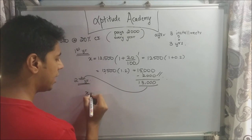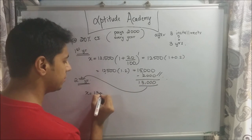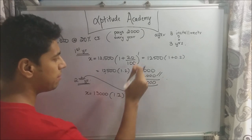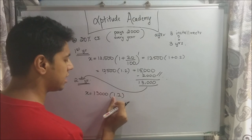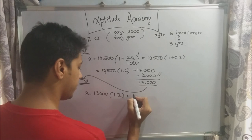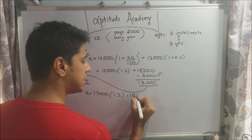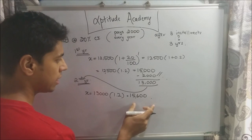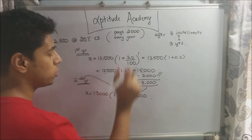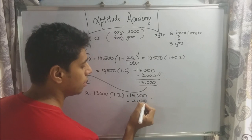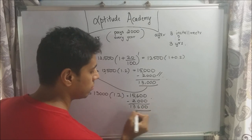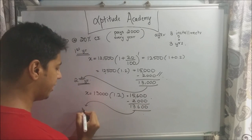For the second year, the new principal is 13,000. X = 13,000 × 1.2 = 15,600. That is what he owes at the end of year two. He again pays Rs. 2,000, so 15,600 − 2,000 = 13,600. This becomes the principal for year three.